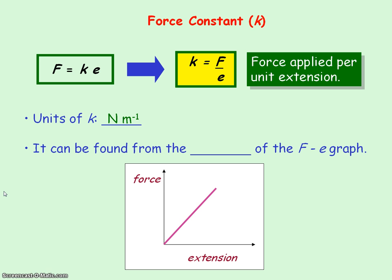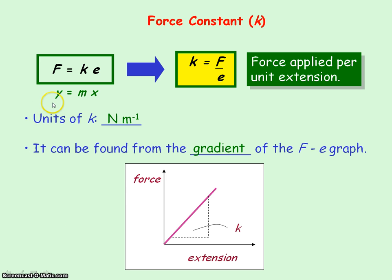The force constant is found from the gradient of a force-extension graph. Because if you have a straight line through the origin, the equation of that line is y = mx. Our y represents the force F, and our x is the extension E. So whatever we have in front of x is our gradient — meaning the gradient is the force constant.